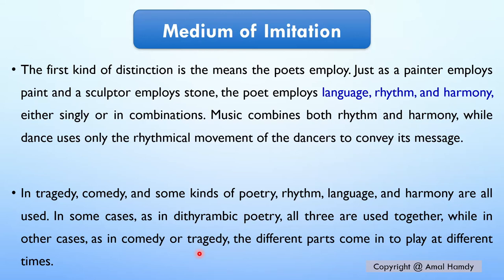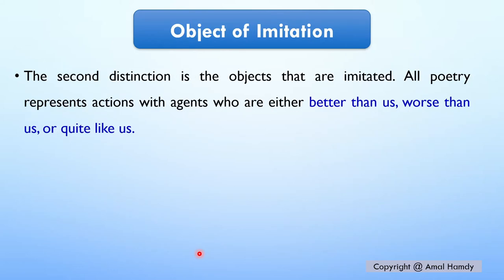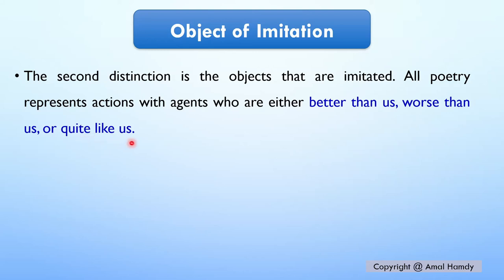The second distinction is the objects that are imitated. All poetry represents actions with agents who are either better than us, worse than us, or quite like us. The object of imitation is of course people — people who perform certain actions — and these people could be better than us, worse than us, or quite like us.